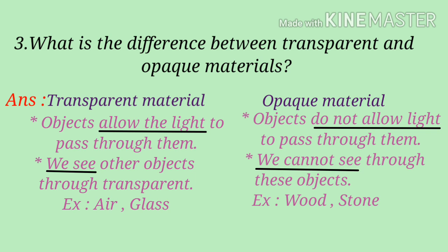Transparent — example: air, glass. Opaque — example: wood, stone.